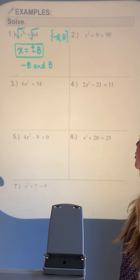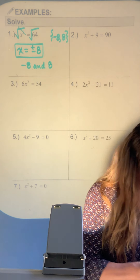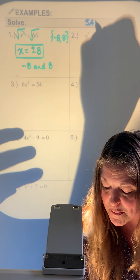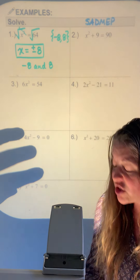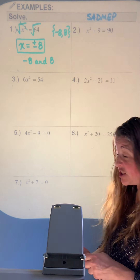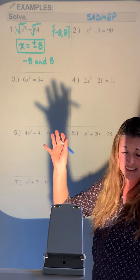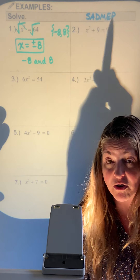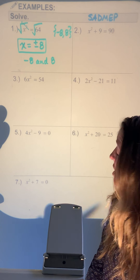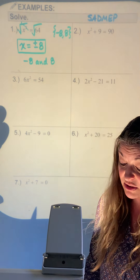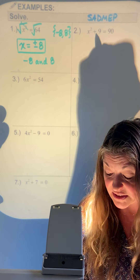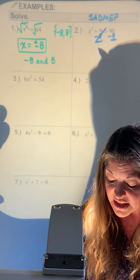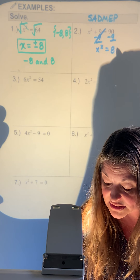For number 2, x squared is not alone. I'll write SADMEP above it — even though it has a crazy x squared, I'm really just doing regular equation solving using reverse order of operations. The first thing I'll do is look for any addition or subtraction, and the 9 comes into play.